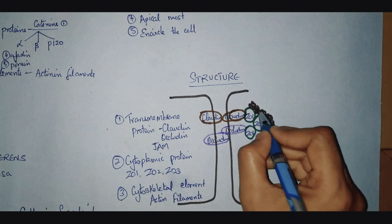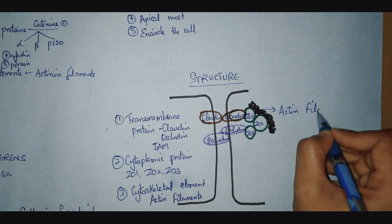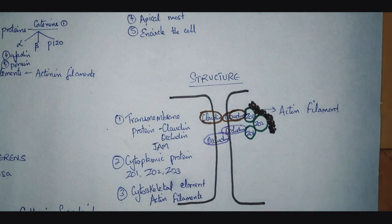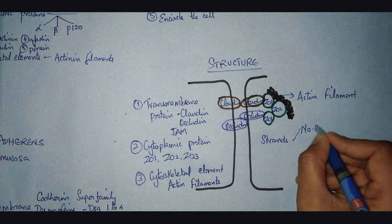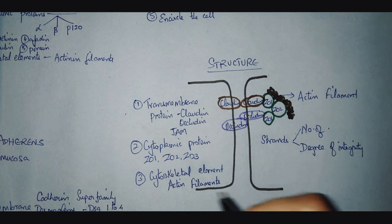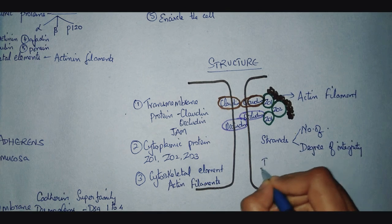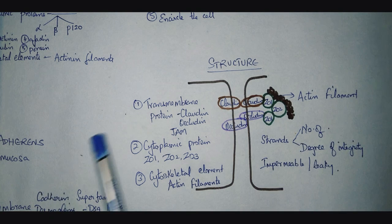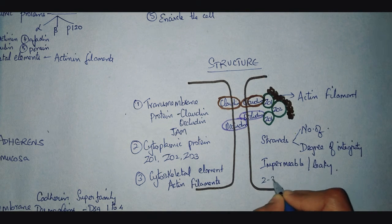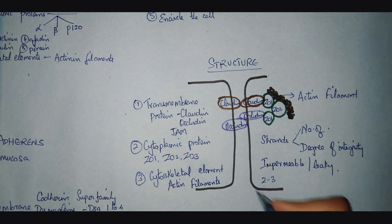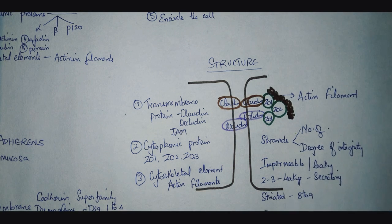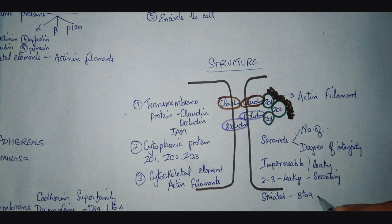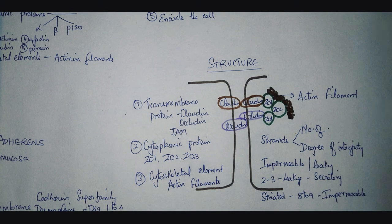The transmembrane proteins are present as strands. Based on the number of strands and their degree of integrity, tight junctions can be either completely impermeable or leaky. In the secretory cells of the salivary gland, only 2 to 3 strands are present, so they are relatively leaky. In the striated duct of the salivary gland, there are 8 to 9 strands, making them completely impermeable to water. This is an important exam question.